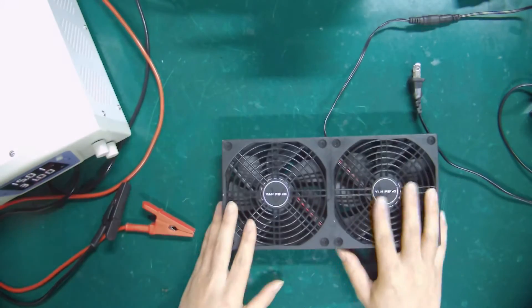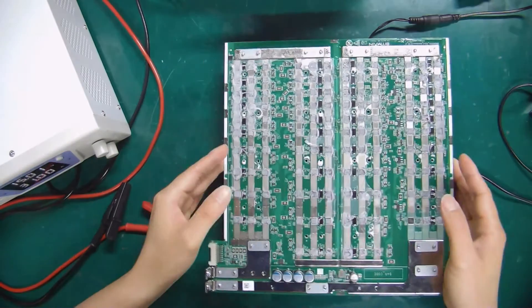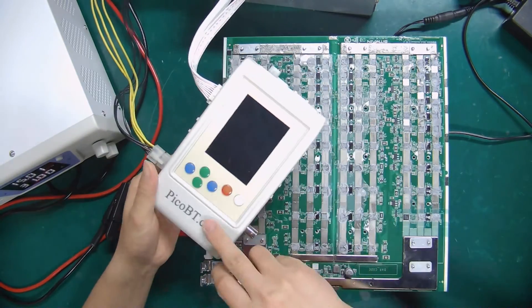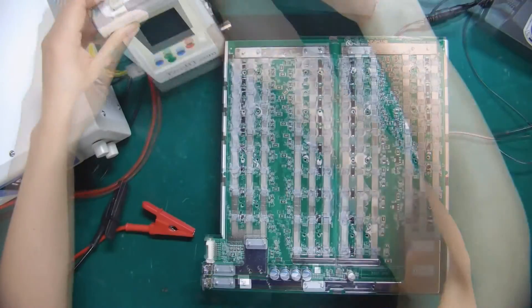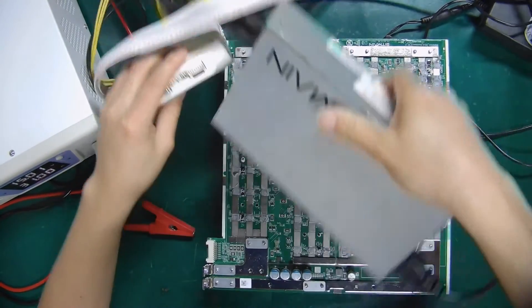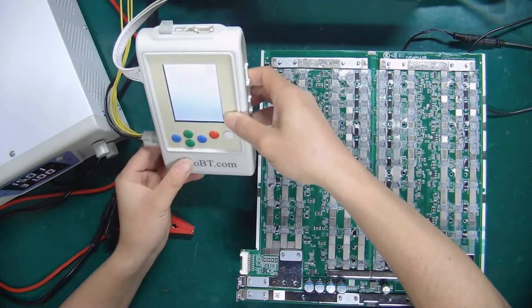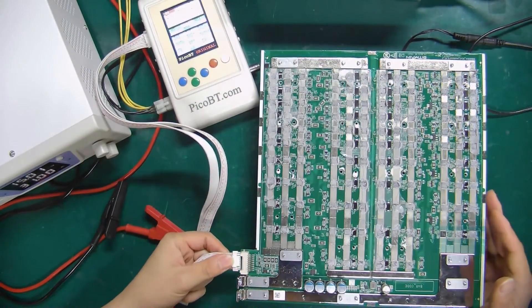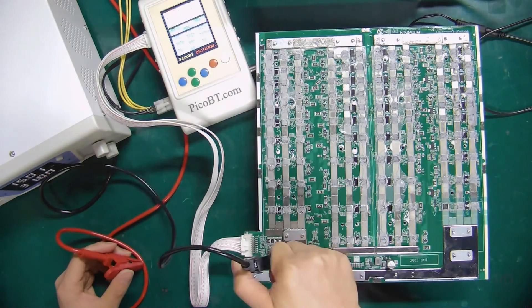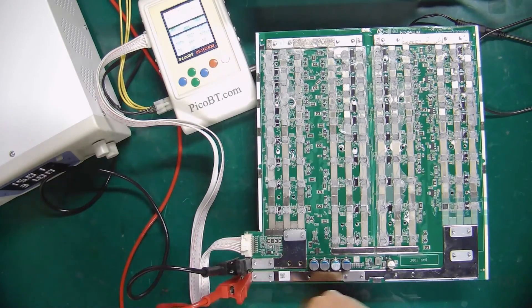When testing the hash board, use a cooling fan to dissipate heat. PicoBT test fixture for detecting the hash board. APW3 plus PSU to power the fixture. OK, turn on the fan and test fixture. Connect the fixture's ribbon cable to the hash board. Clip the other end of the alligator power cord to the hash board's positive and negative poles.